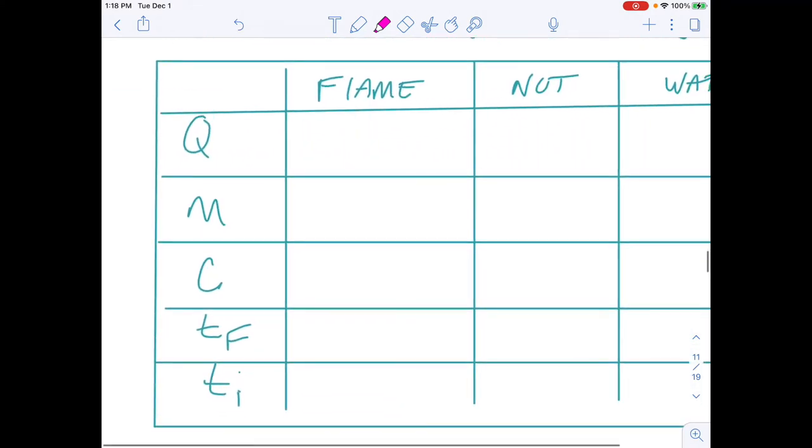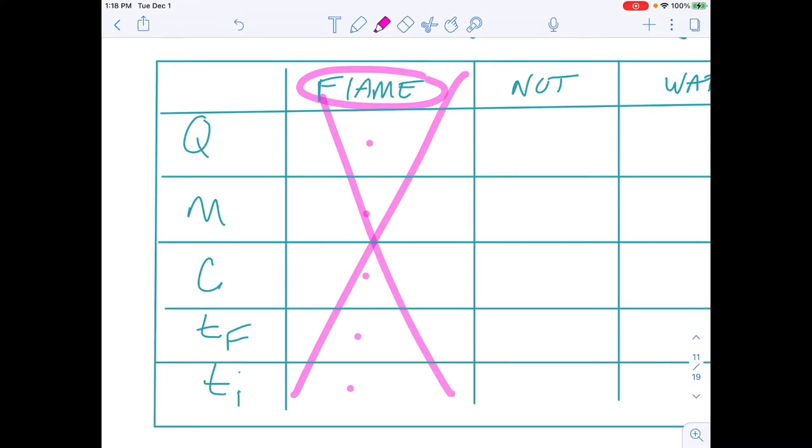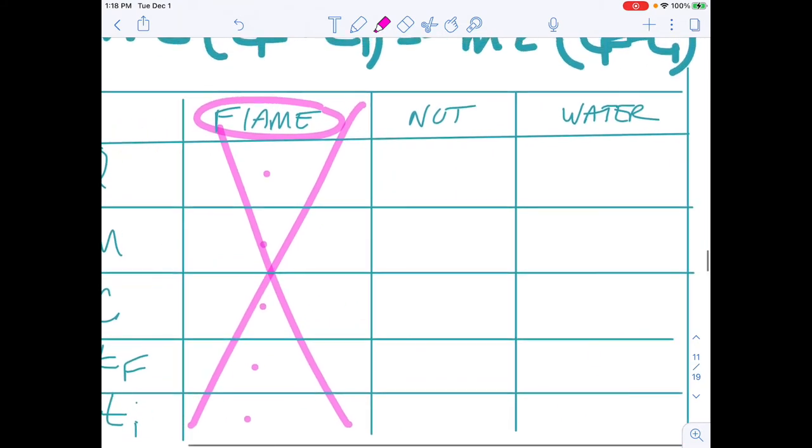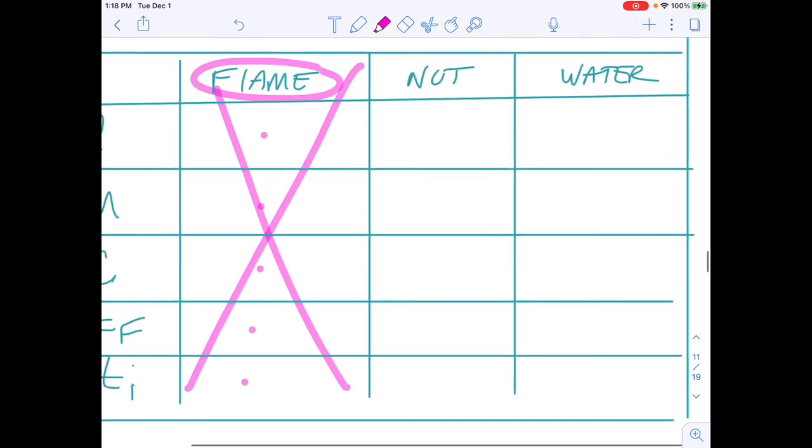So here's our data table. Let's look at our information for our flame and don't have that, don't have a mass of a flame, don't have a specific heat of a flame, don't have a final temperature of a flame, and don't have initial temperature of flame. So flame is no help to us at all.